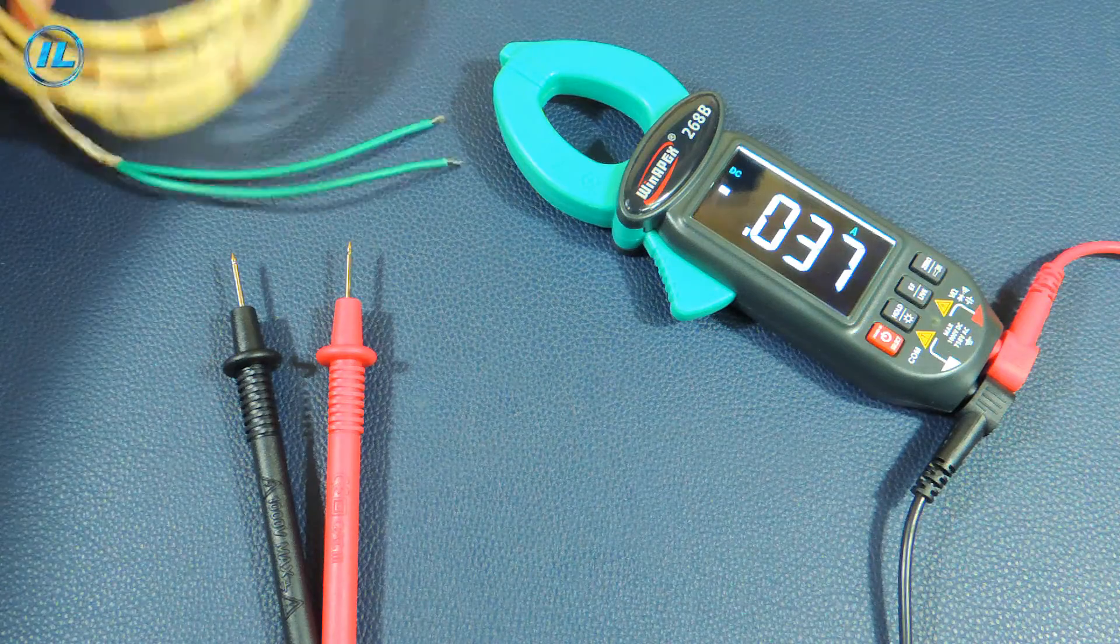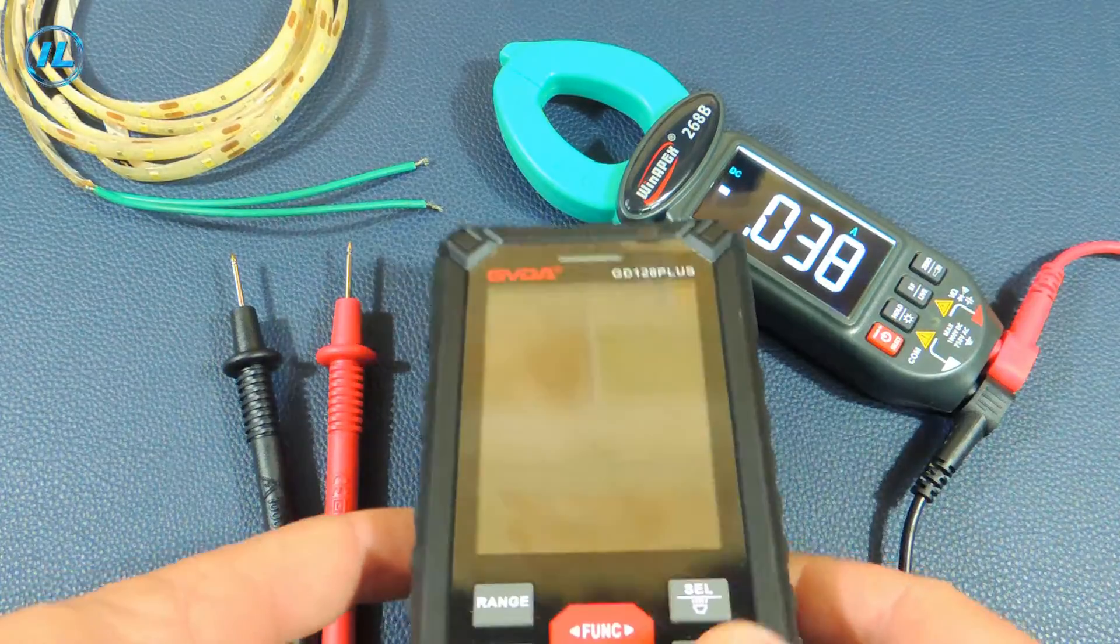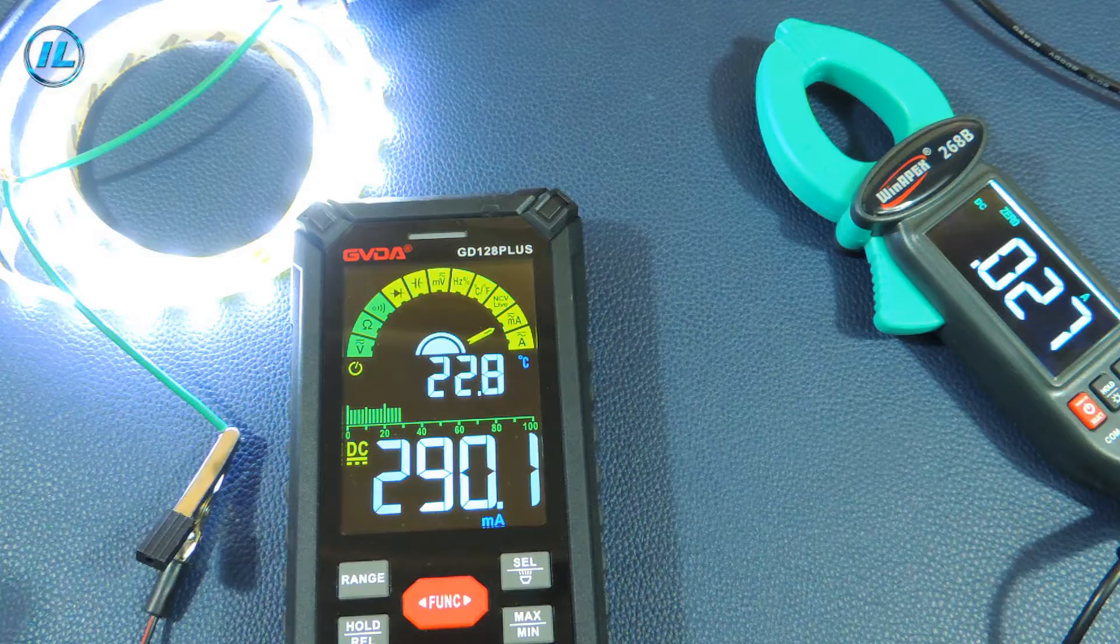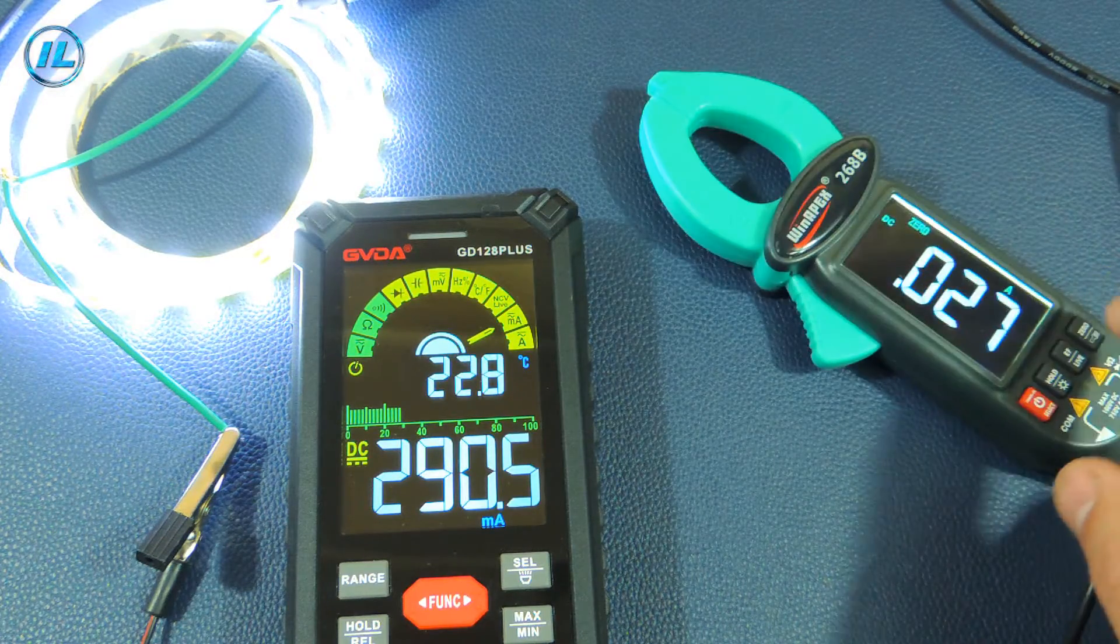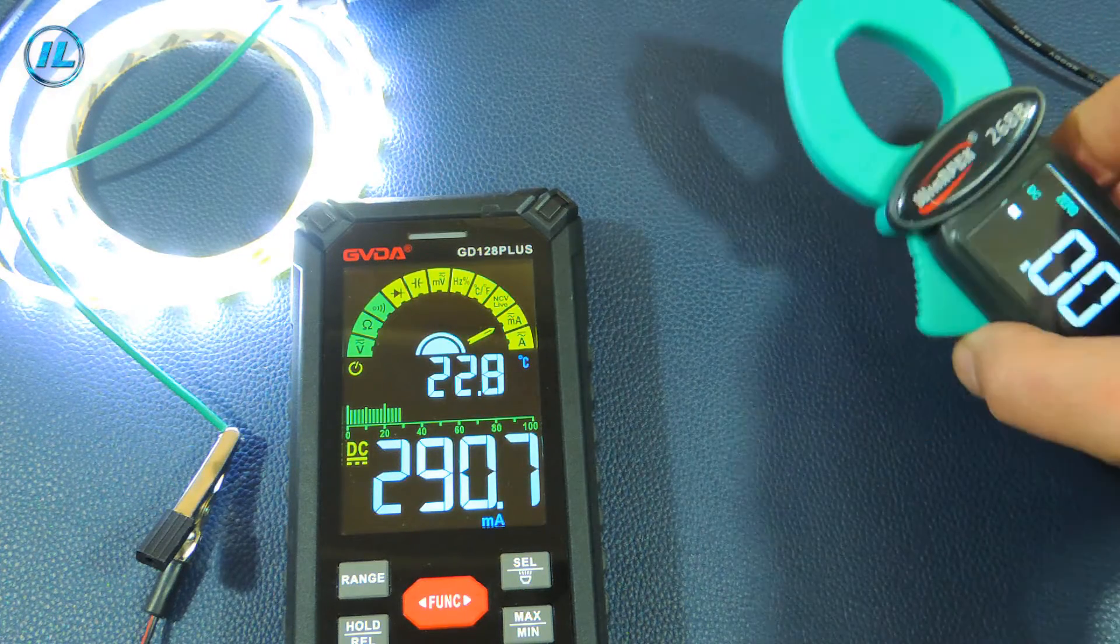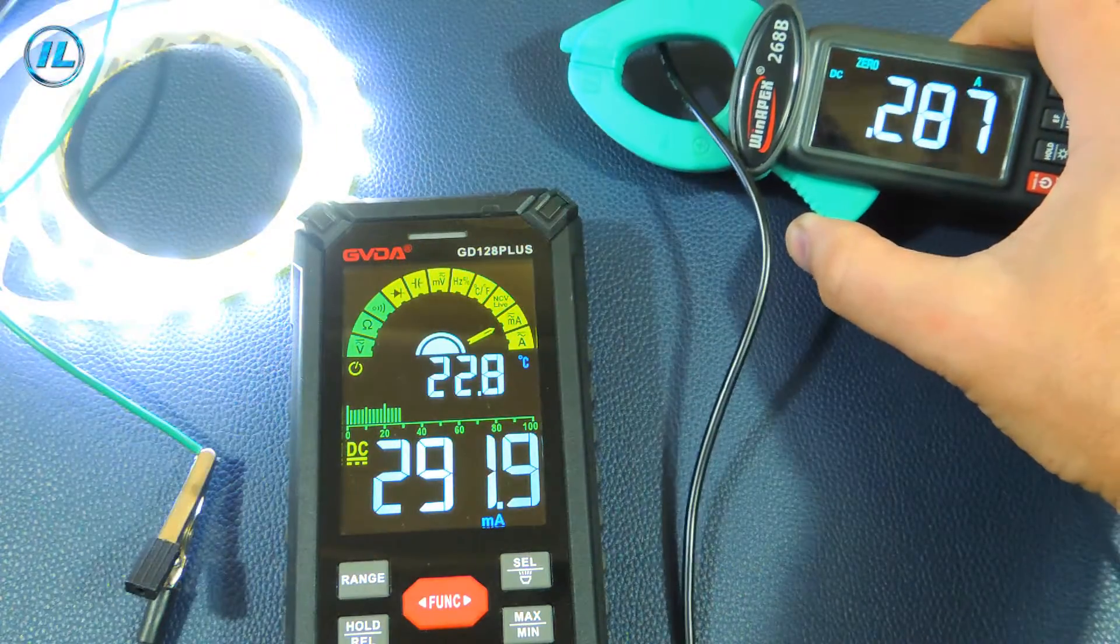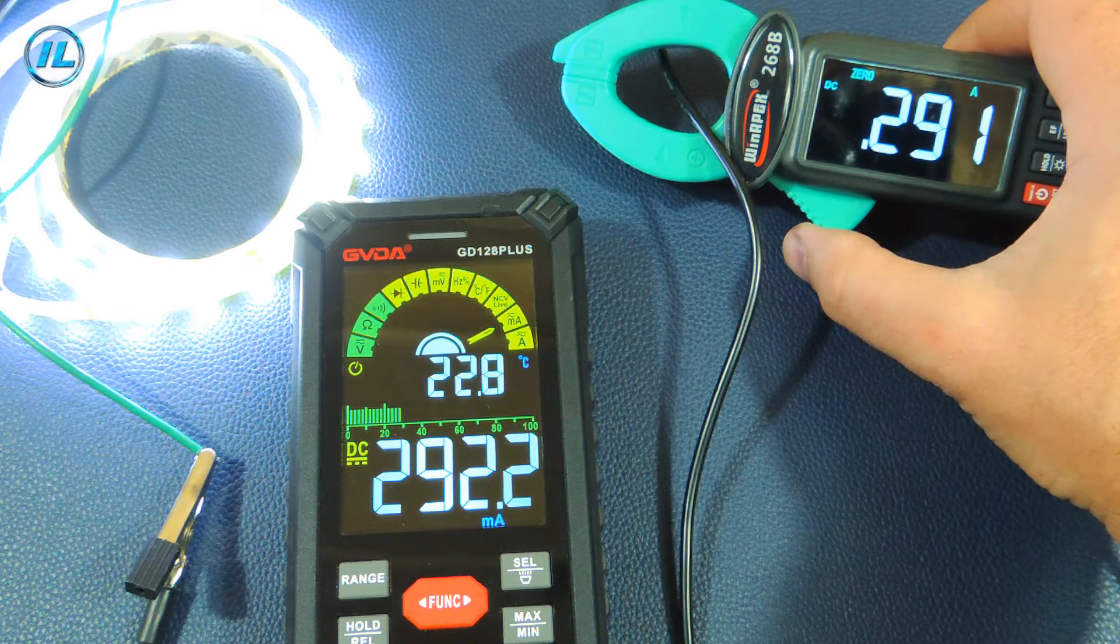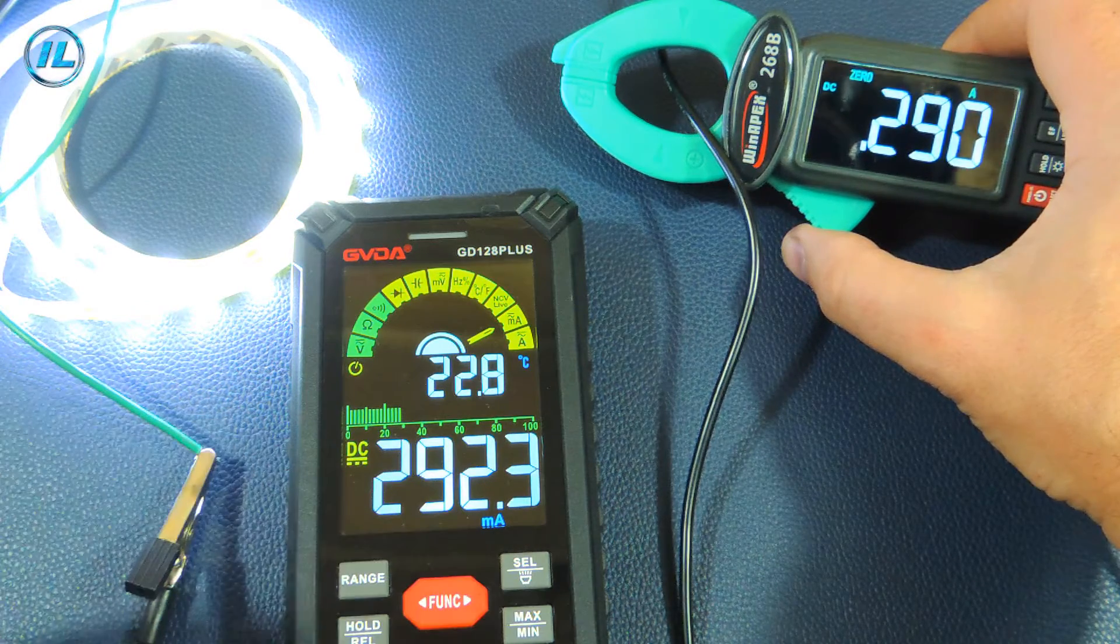Now I'm going to measure how much current this LED strip consumes. To have something to compare it with, I will connect another multimeter. The current strength is 290 milliamps. Now I will reset the value on the screen and measure the current strength with these current tongs. The result is 293 milliamps. Very accurate. Practically one-on-one with this multimeter.